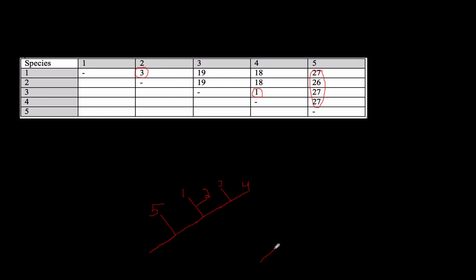We could have drawn it differently though - this would be an acceptable cladogram. Or we could have gone: common ancestor, the one that has the most differences as the outgroup here, and then a branching event, and here we could have had three and four, and then you could have had one and two because they're closely related to each other. Either one of these would work - either one of these are acceptable. This is showing how closely related three and four are and how closely related one and two are. And that's what we can get from the chart - you want to be able to use the data in order to create a cladogram. Since those have the least number of differences, this shows, either way, how closely related they are.